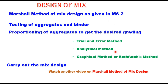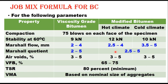The mix design should meet the following parameters: compaction level of 75 blows on each face of the specimen; stability at 60 degrees centigrade to be 9 kN for viscosity grade binder, 12 kN for modified binder in hot climate, or 10 kN for modified binder in cold climate. Marshall flow, Marshall quotient, air voids, voids filled with bitumen, tensile strength ratio, and voids in mineral aggregate are all specified in MORTH specifications and remain the same whether layer thickness is 50 mm or less.